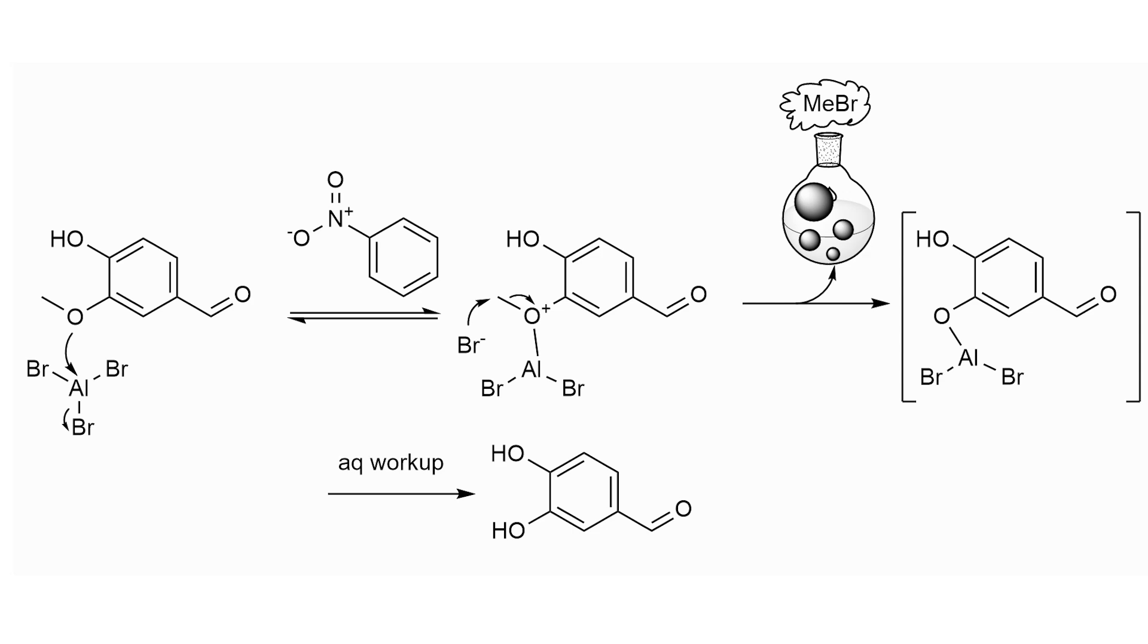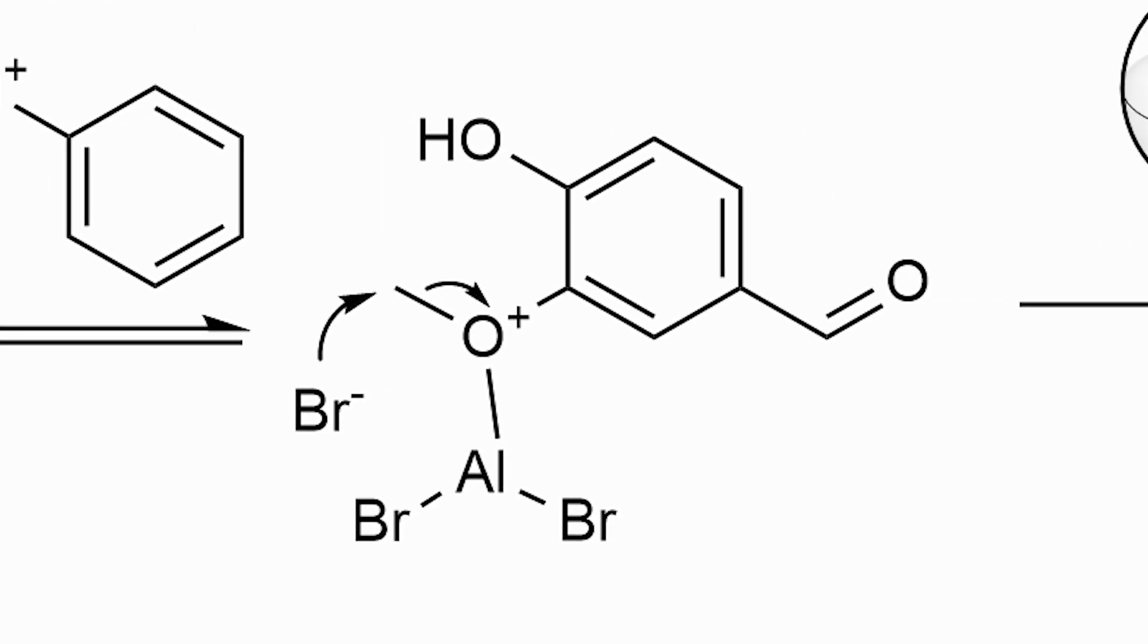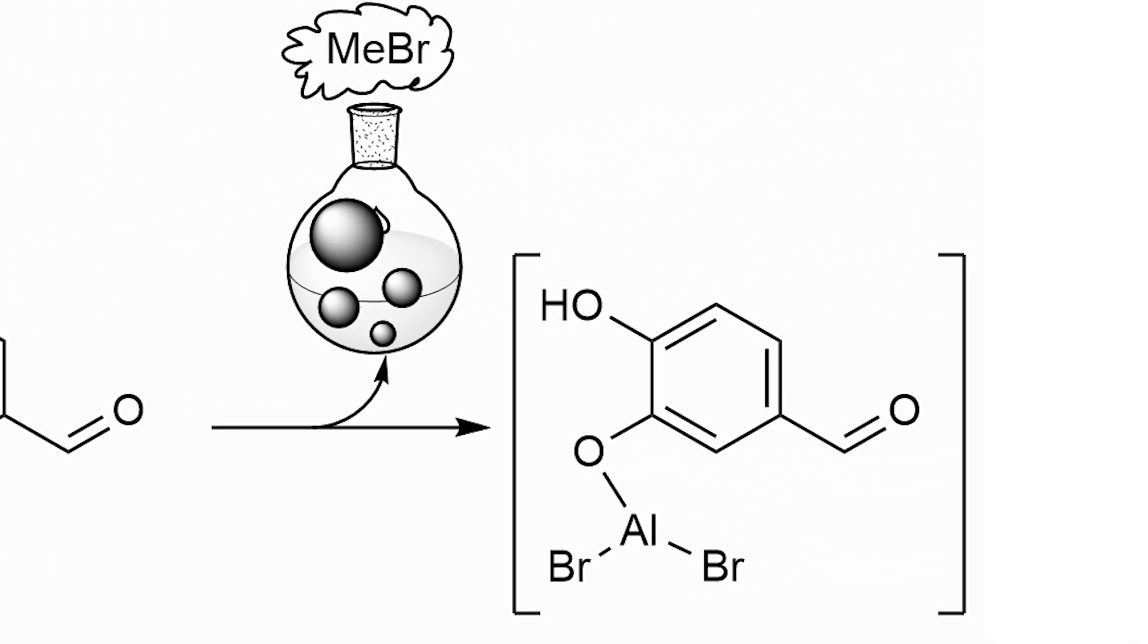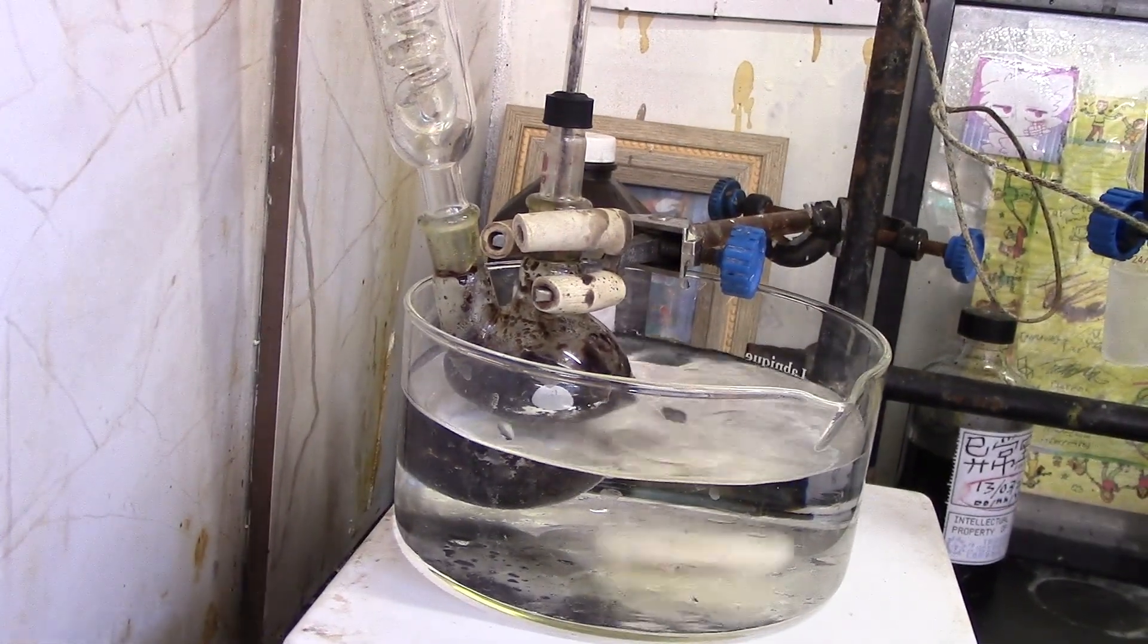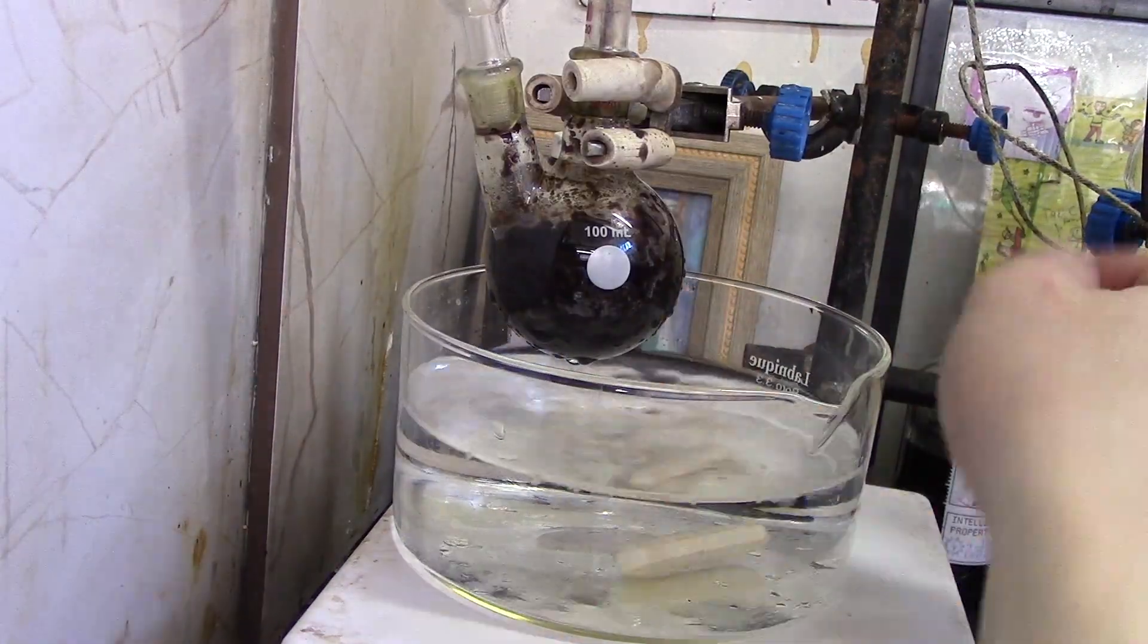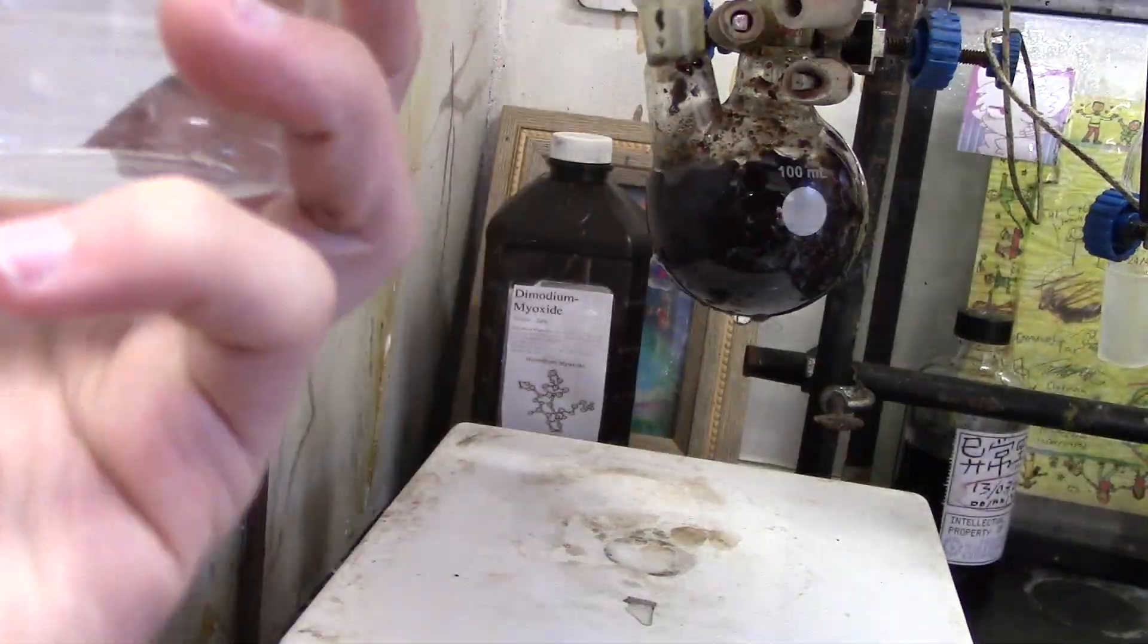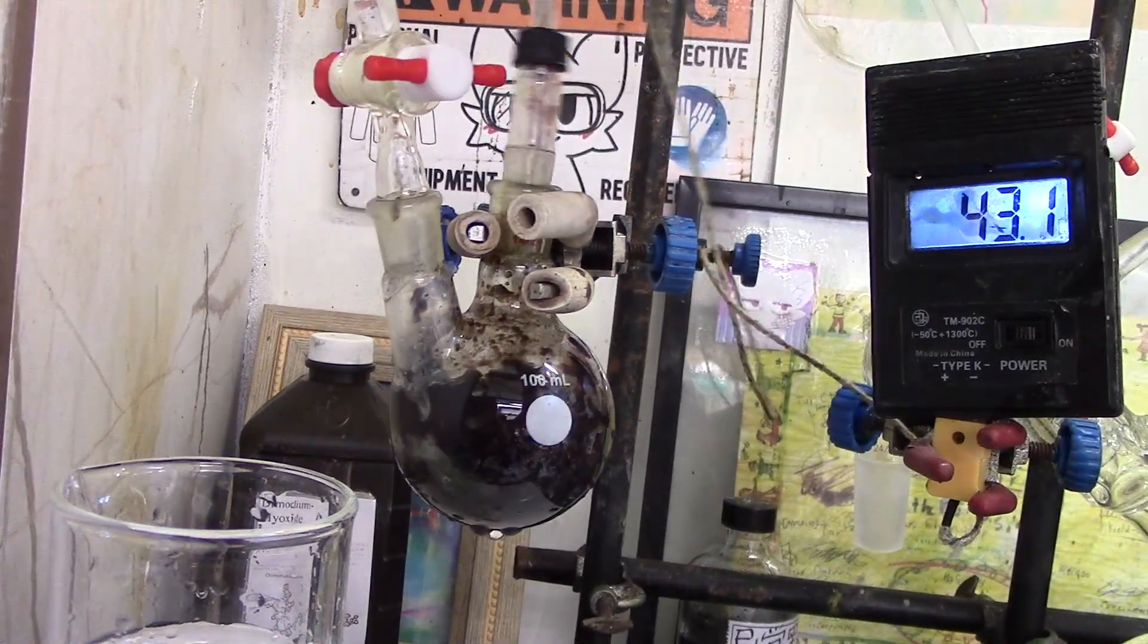But let's take a look at what's happening here. So it's just a standard Lewis acid-catalyzed demethylation, basically an ether cleavage. Now usually you would use something like boron tribromide, but we're using aluminum bromide here. And you can see in the mechanism I came up with, the nitrobenzene is just kind of there. I'm pretty sure it forms a complex, but I don't know the structure of it, so I just didn't draw it.